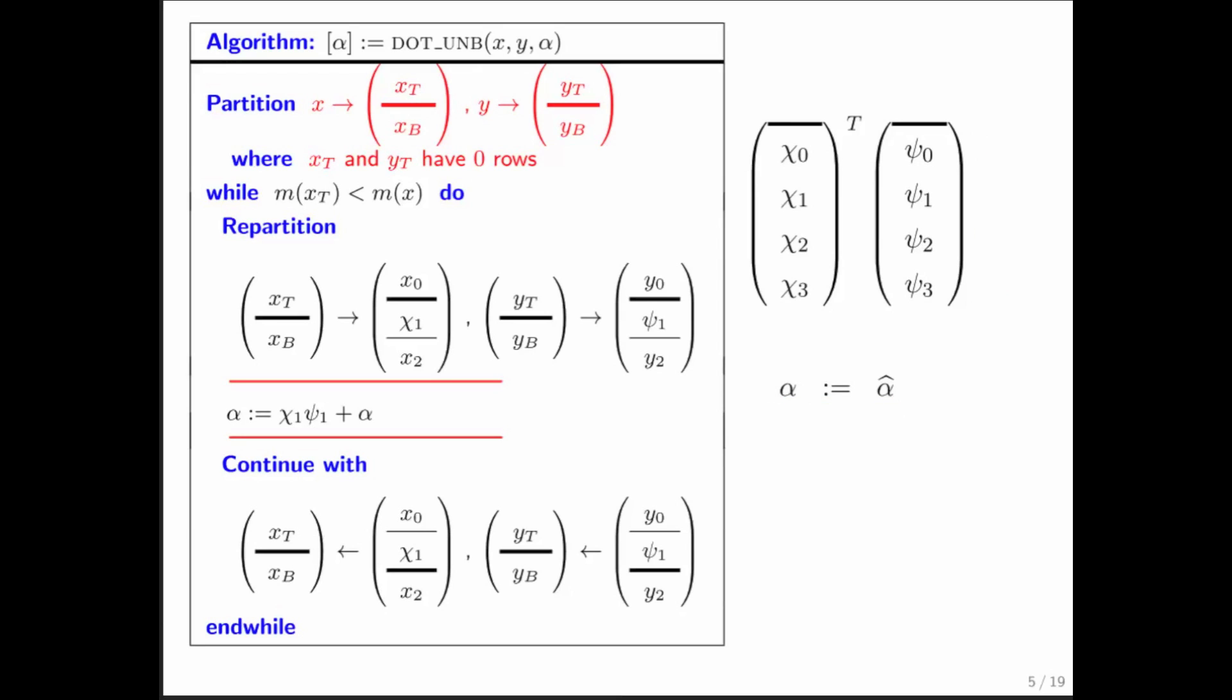And let's have a look. We start by partitioning, putting these thick lines at the top here. Then we repartition, exposing the top two elements. Then we multiply those top two elements together to update alpha. So now the contents of alpha are its original contents plus the result of this multiplication.